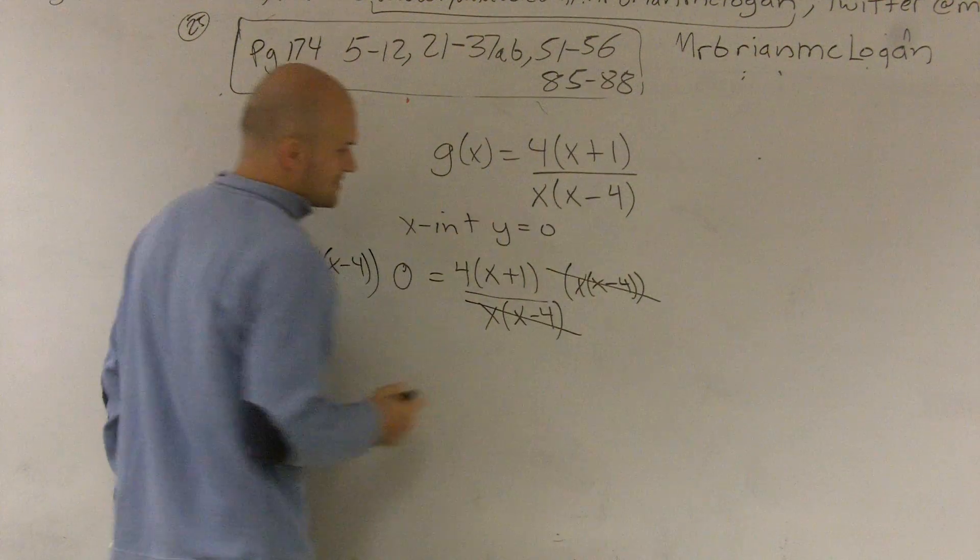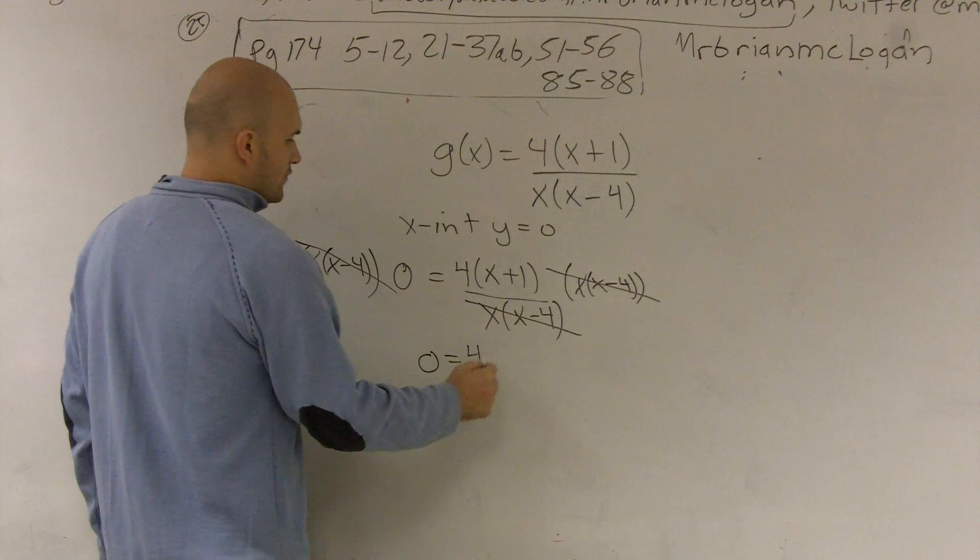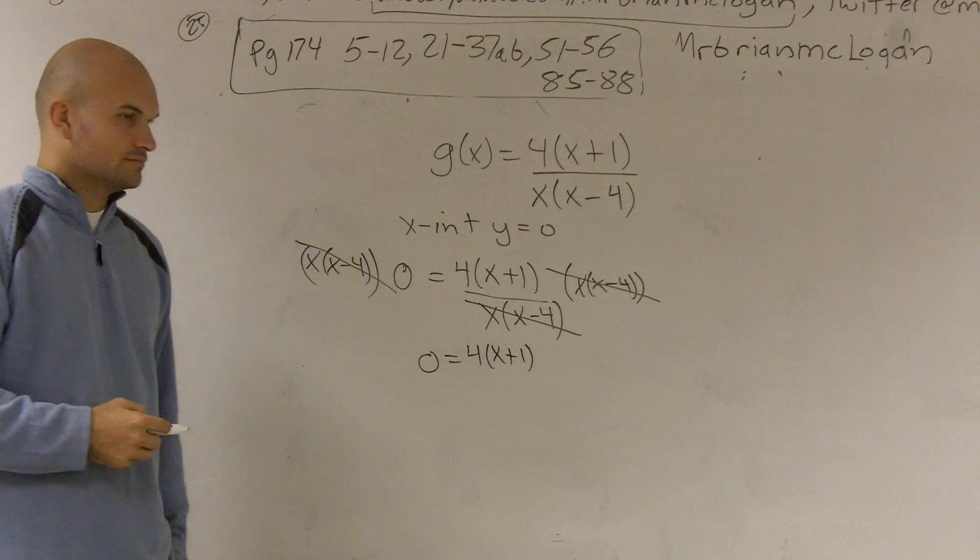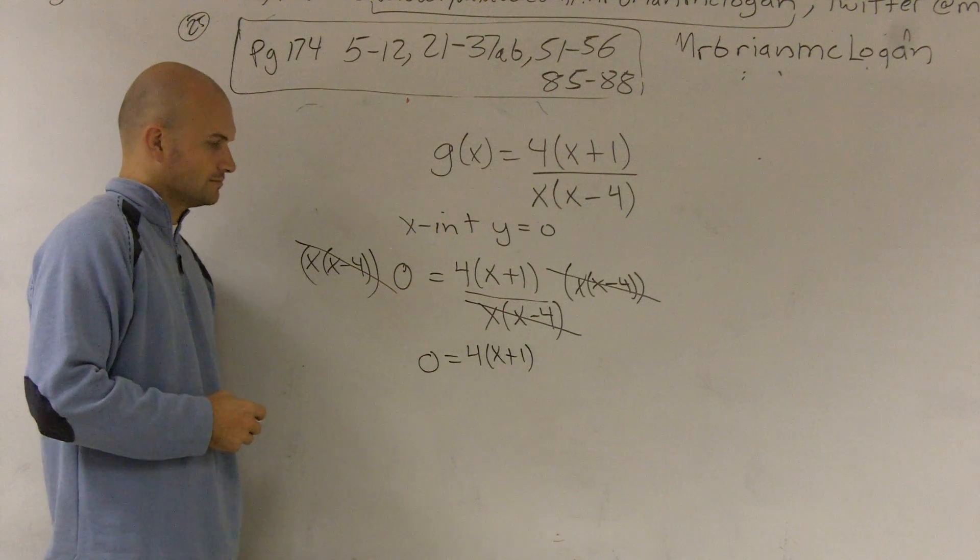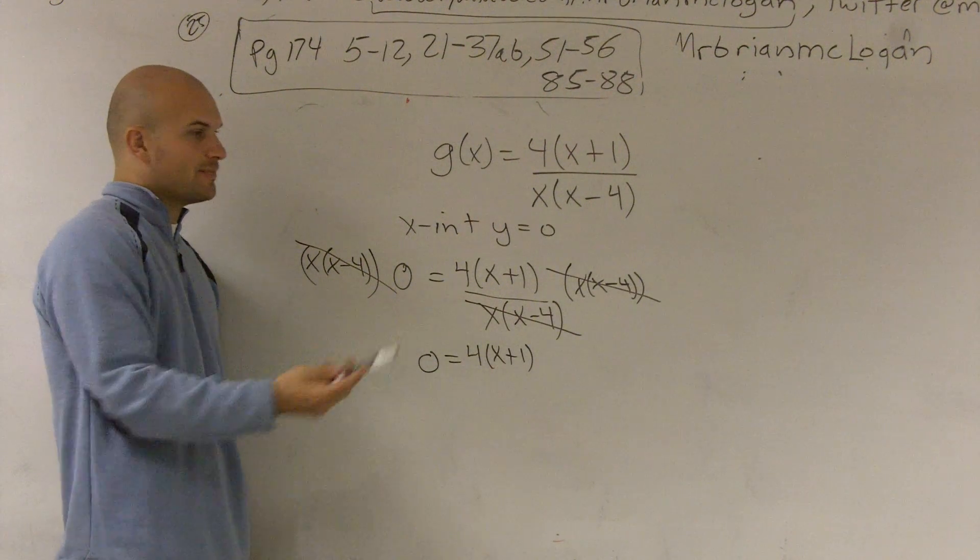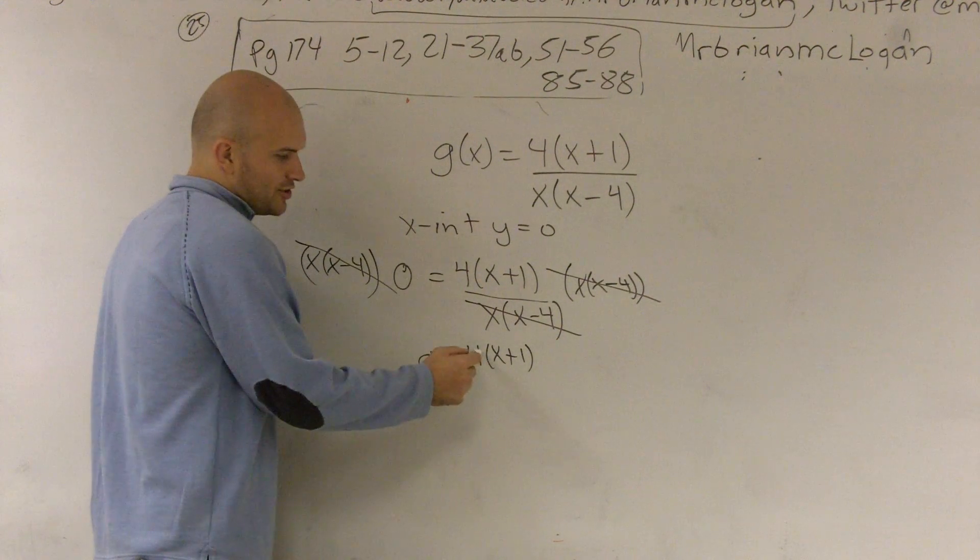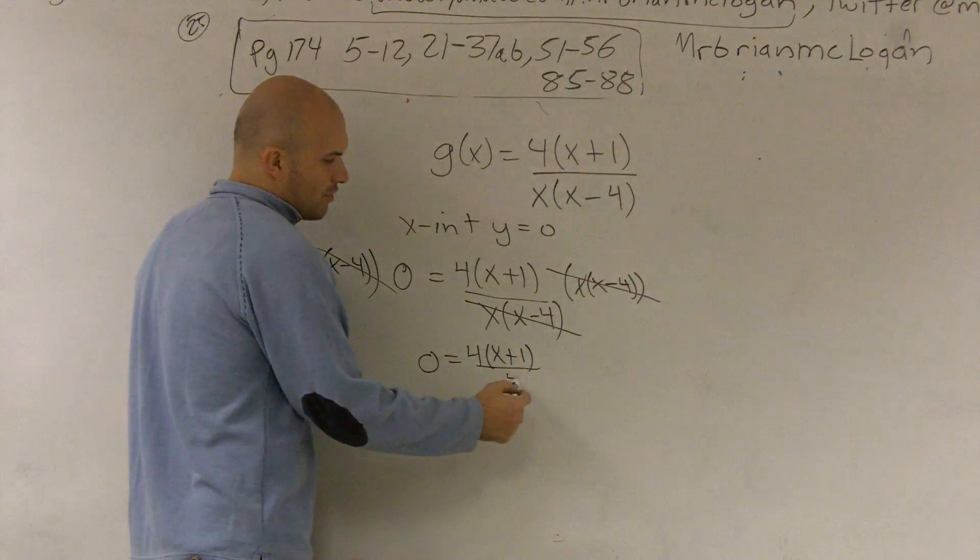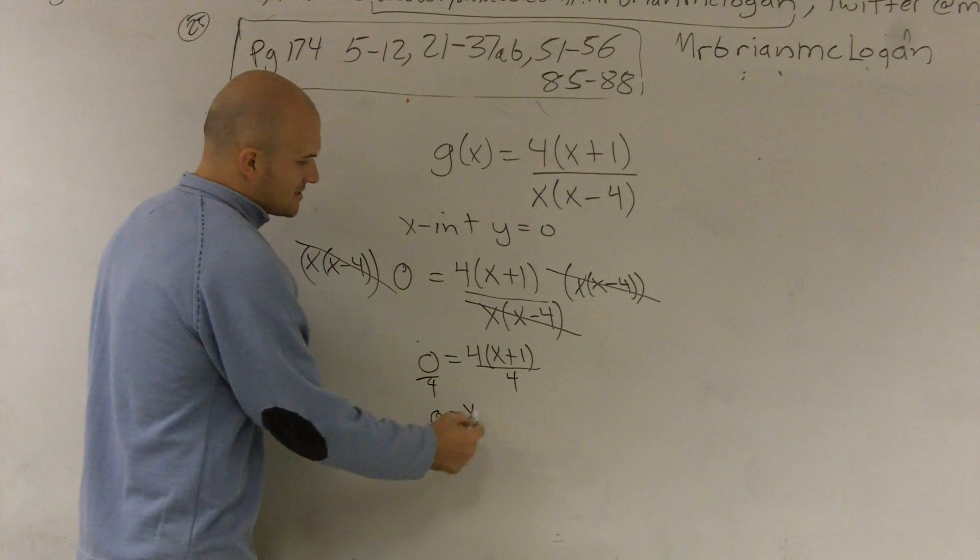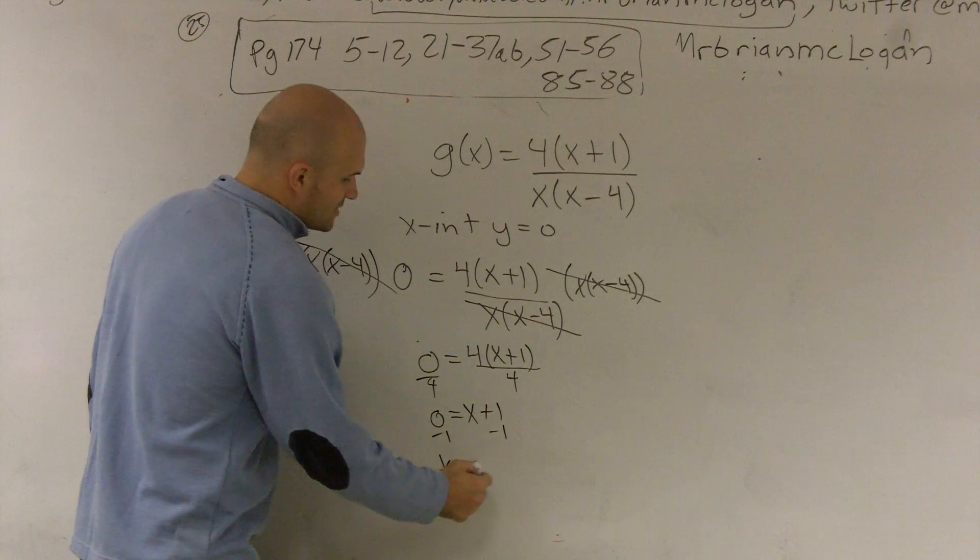That's now going to cancel out, and that's going to become 0. So I'm left with 0 equals 4 times x plus 1. And I can still do the distributed property, but you're still going to get the exact same answer anyway, so it really doesn't matter. Here, I can undo multiplication of 4 by dividing by 4. That becomes 0 equals x plus 1. Subtract 1. x equals negative 1.